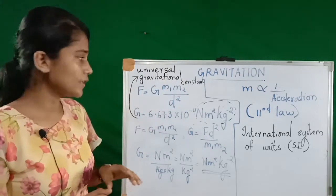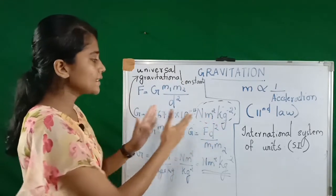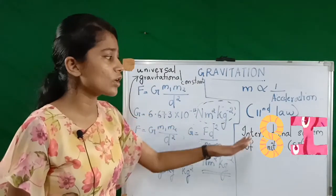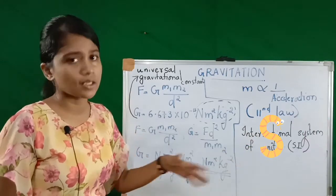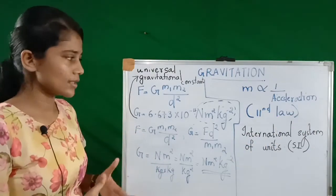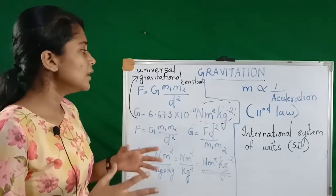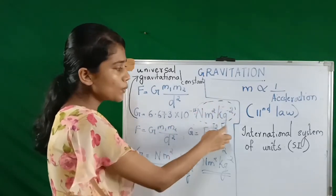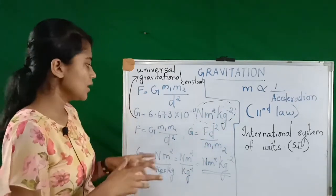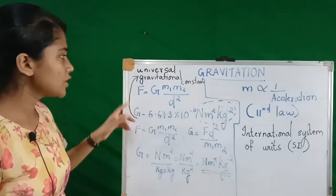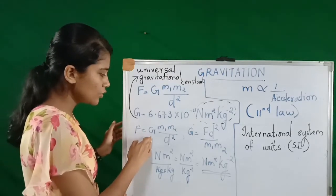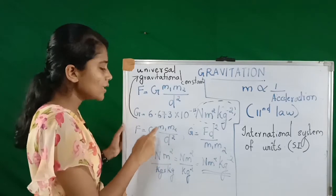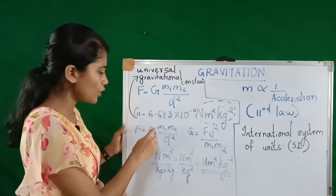Now you know the value of G. The unit that comes along with this whole number is called the SI unit, or international system of units. You must have learned that in previous classes. Now we will move on to find out how we get this SI unit. We know that the equation for force is F equal to G into m1 m2 the whole divided by d square, and we are going to calculate the SI unit for G.